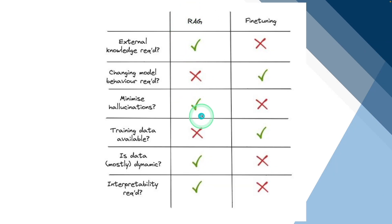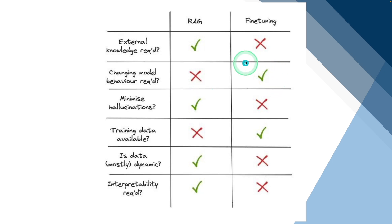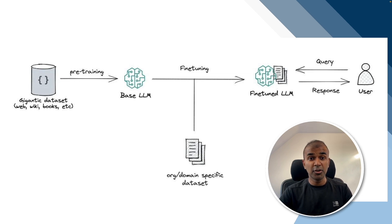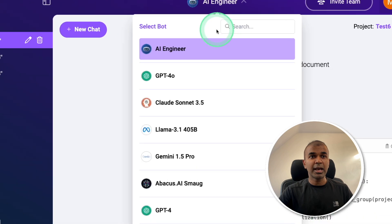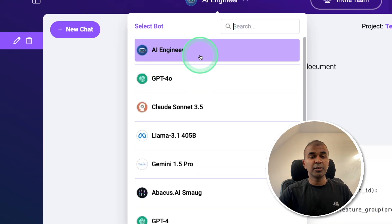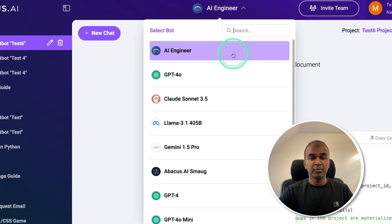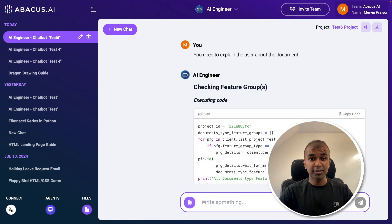RAG has key benefits: it minimizes hallucination, allows dynamic data, and lets you read from an external knowledge base. Fine-tuning comparatively has more hallucination than RAG, but allows you to change model behavior. The ultimate goal is to merge both RAG and fine-tuning to get the best of both worlds — but with no code. That's where Abacus AI Engineer comes in, capable of creating a custom chatbot with your data, both as RAG and fine-tuning the model, all handled at the backend. You just give instructions to the AI engineer.